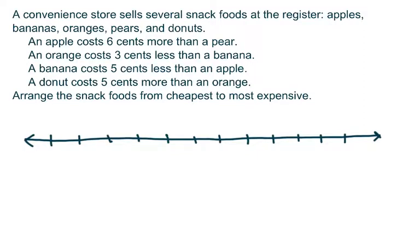Now again, you don't have any specific values to pin to, but if you start picking some of the different statements, you can relate one snack food to another at least. For example, this first line says that an apple costs six cents more than a pear. Now I don't know what a pear costs, but let me just sort of randomly put it somewhere. I'm going to put the price of the pear right here. That is a random choice.